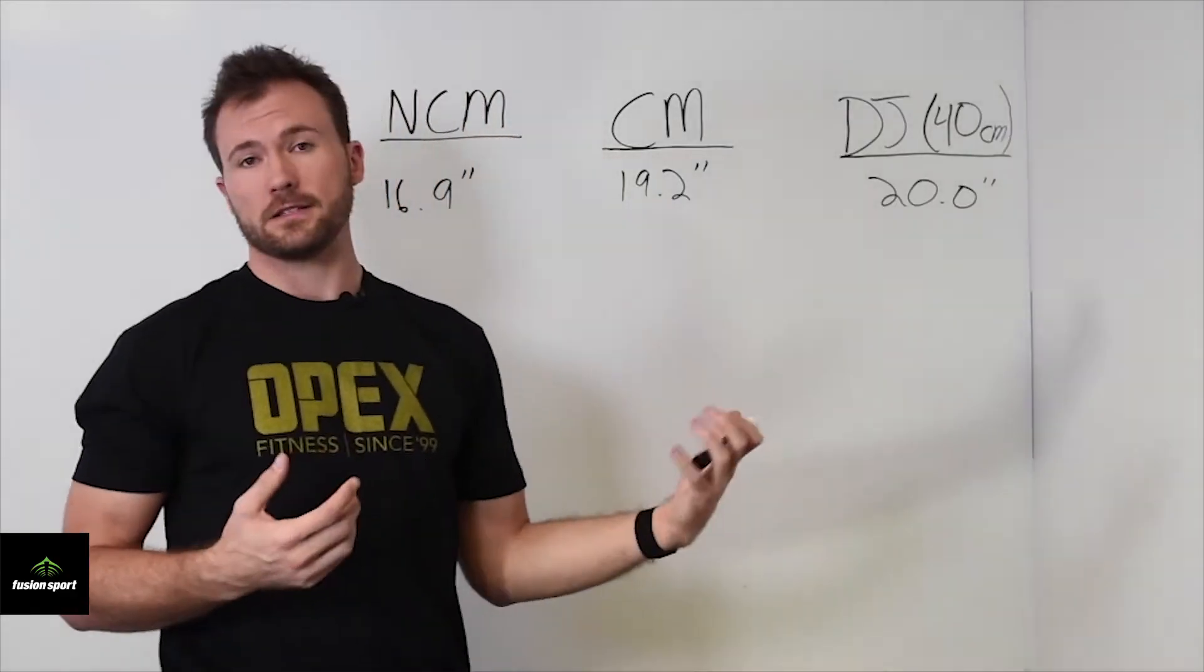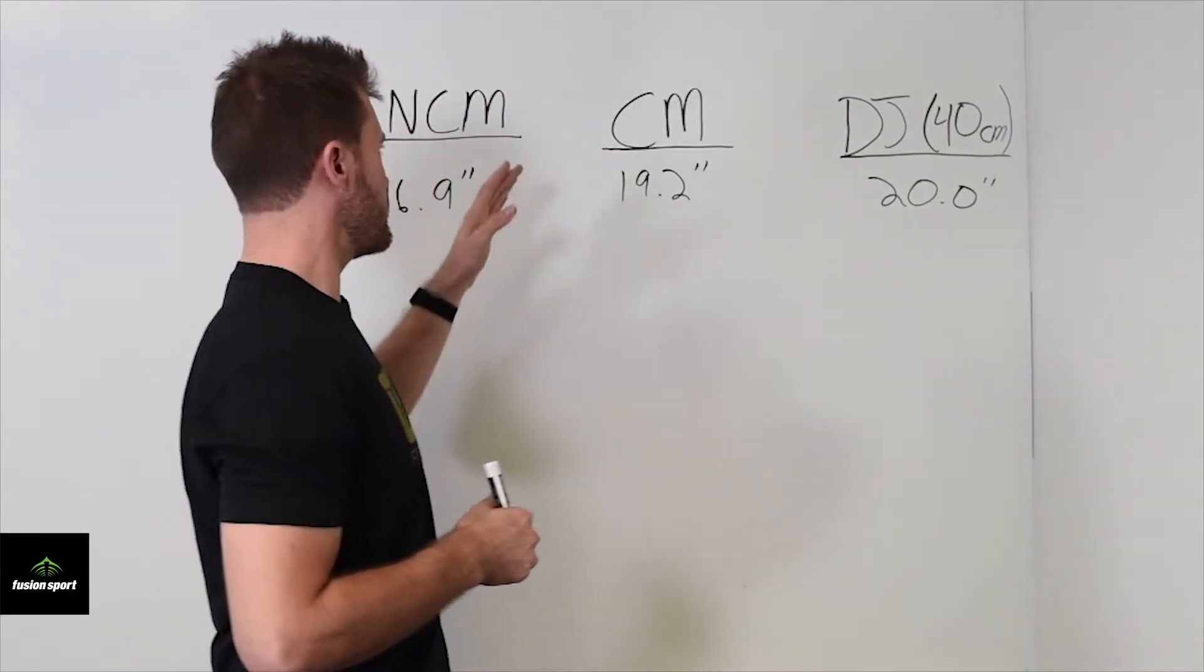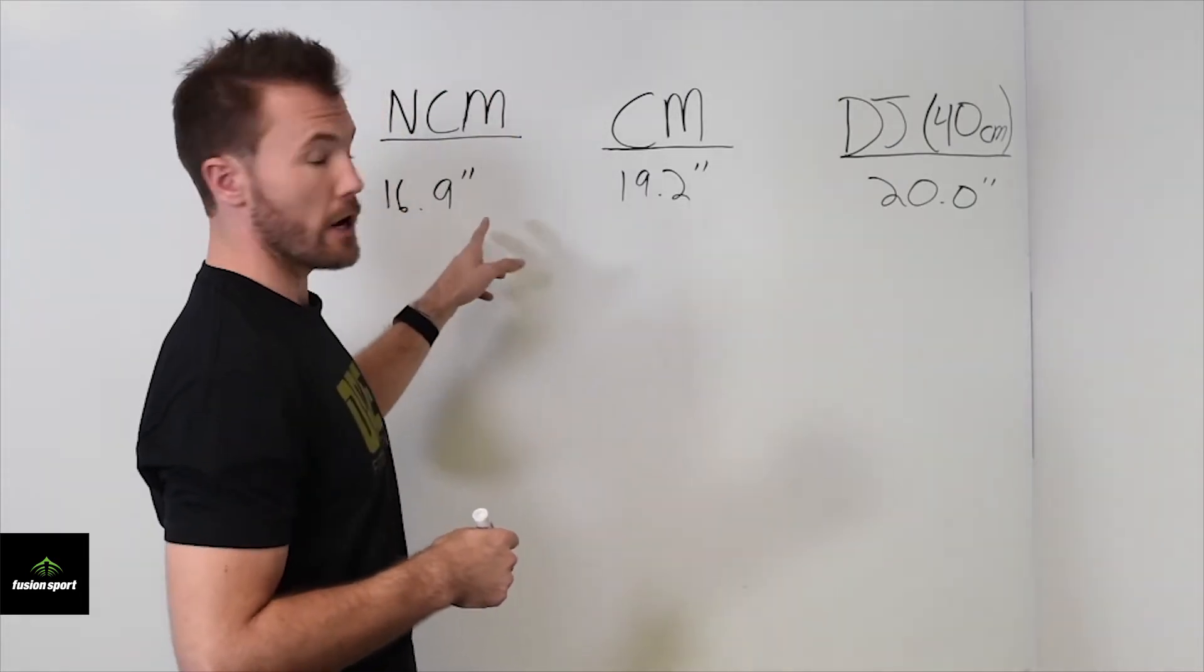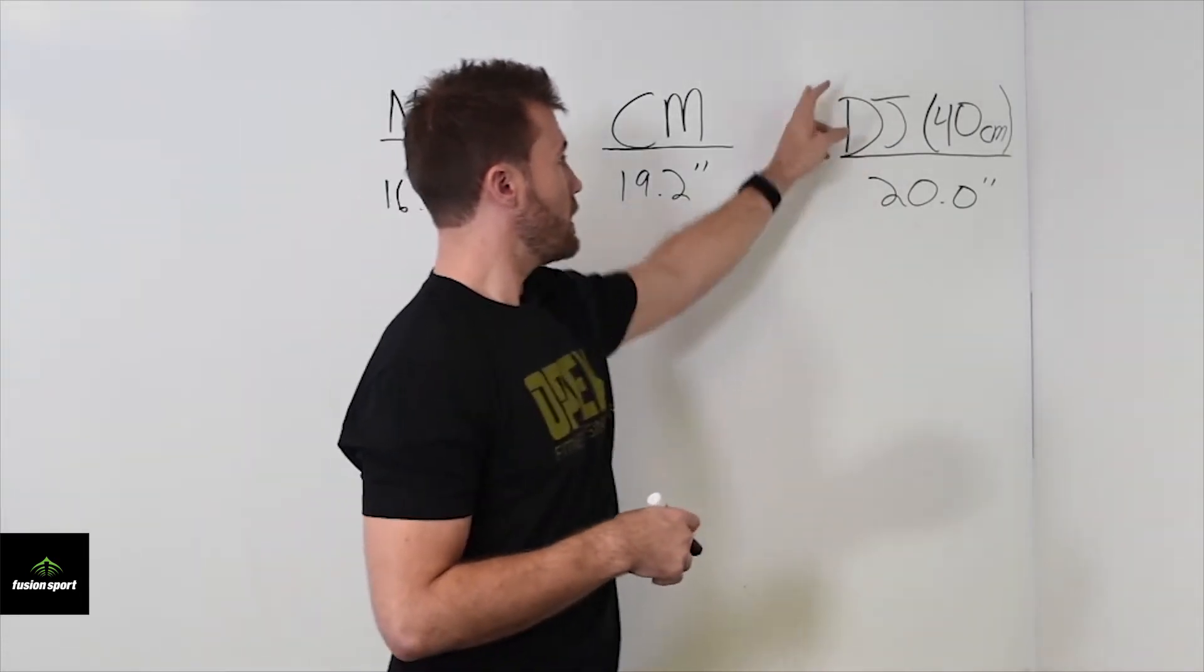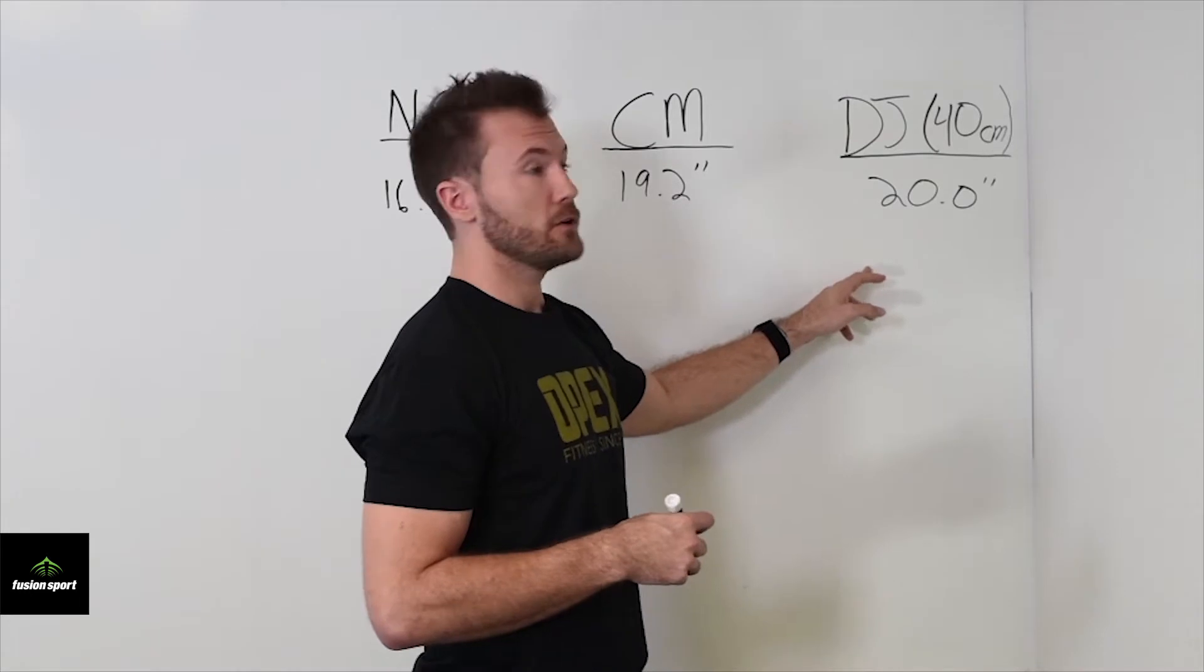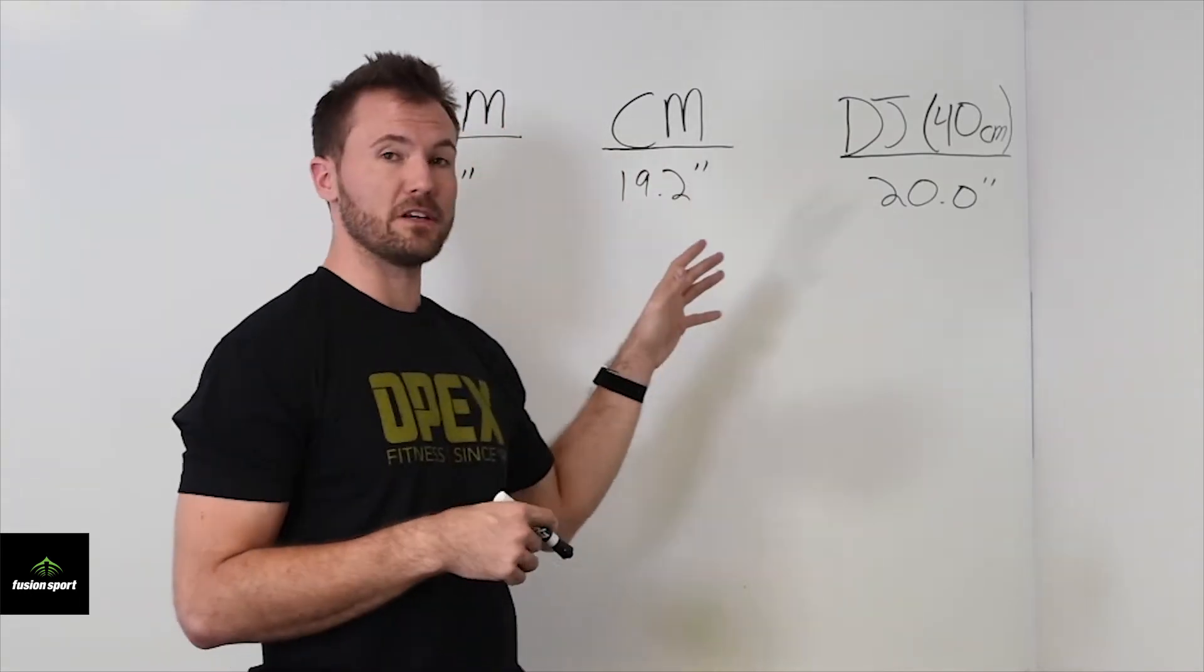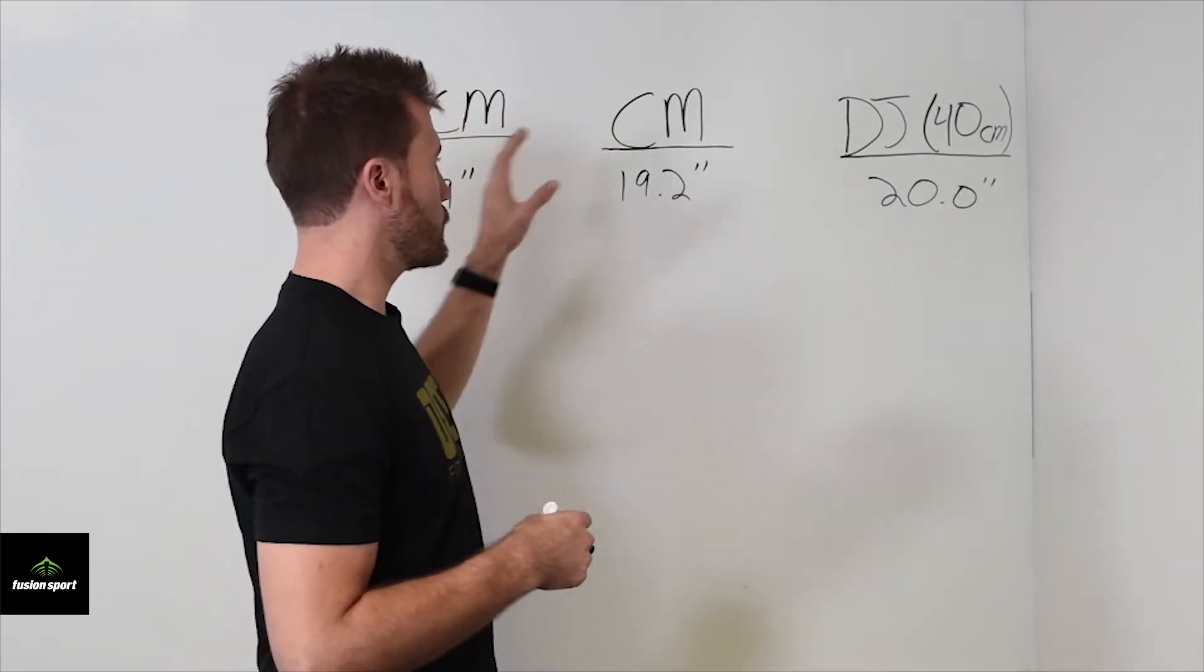We can use ratios and basically simple math to determine where somebody sits on an absolute strength, power production, and reactive strength continuum. So depending on where somebody sits, that just tells us what characteristics of fitness we need to work on in their program.